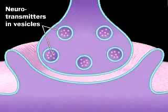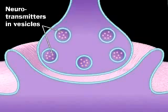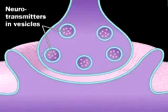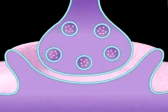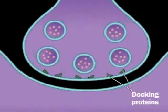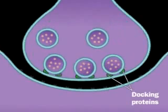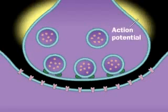Neurotransmitter molecules are stored in vesicles in the presynaptic neuron. Some vesicles dock, via specific docking proteins, at the presynaptic terminal. An electric impulse, called an action potential,